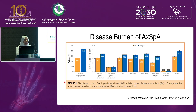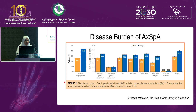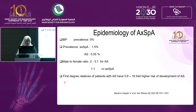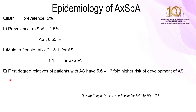The burden of axial spondyloarthritis regarding quality of life, employment limitations, and cost of treatment is similar to rheumatoid arthritis. Unfortunately, these patients will not achieve full employment. Worldwide, the prevalence of axial spondyloarthritis is 1.5%, and for ankylosing spondylitis 0.55%. Ankylosing spondylitis is more common in men, but non-radiographic axial spondyloarthritis is equal in both men and women. First-degree relatives of patients have a 5.6 to 16-fold higher risk of developing axial spondyloarthritis.